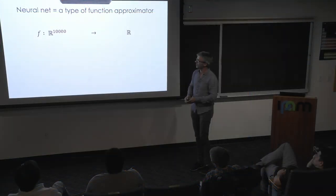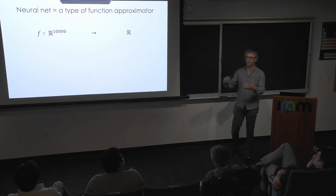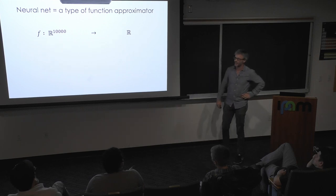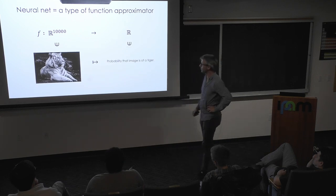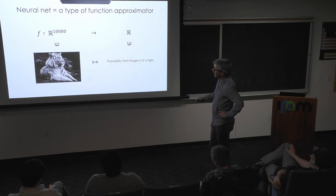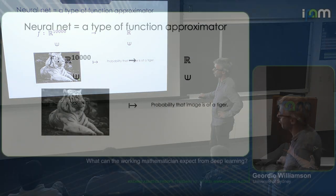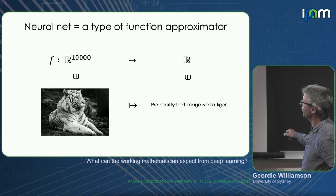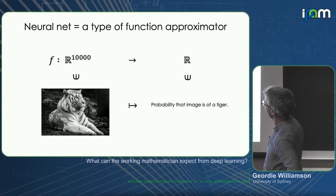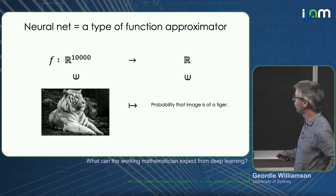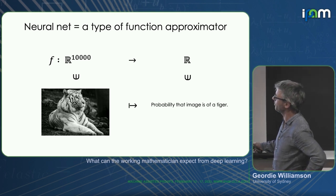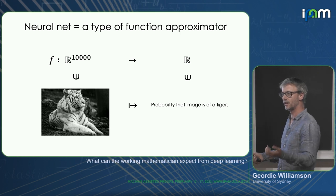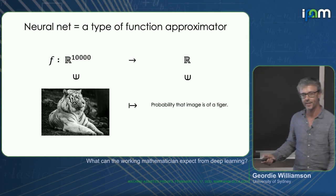So this is the type of function that we're approximating, something from R to the 10,000 to R for example, a function whose domain is very high dimensional. And the functions that we're approximating are of a particular type. Here's an example that doesn't come up much in pure mathematics: an image where each pixel is a grayscale value between 0 and 255, giving a vector in probably 10 million dimensional space. Then I want to produce a number which is positive on tigers and negative on non-tigers.